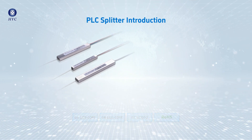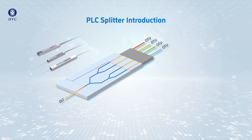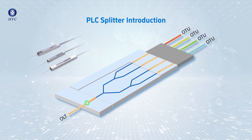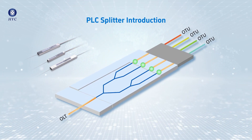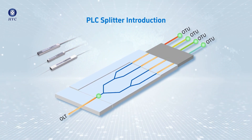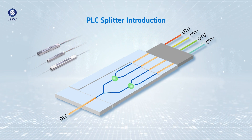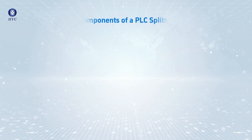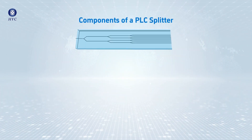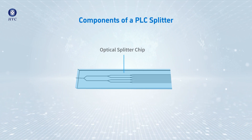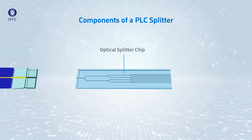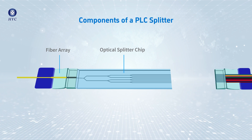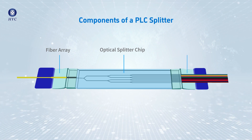PLC Splitter uses an optical splitter chip to divide the incoming signal into multiple outputs. The PLC optical splitter consists of three parts: an optical splitter chip and two fiber arrays coupled at both ends.